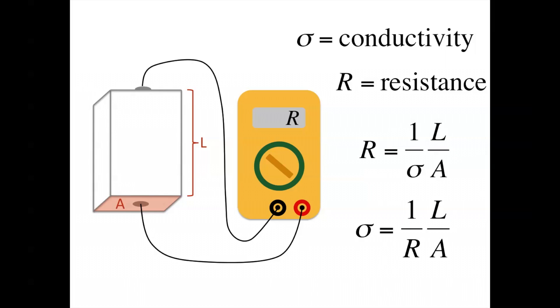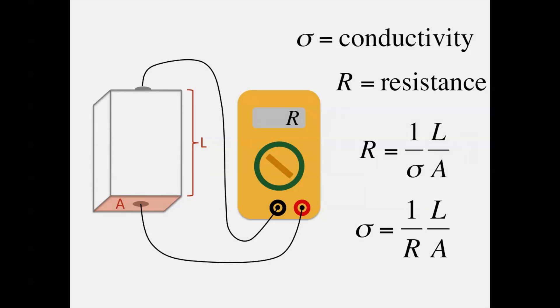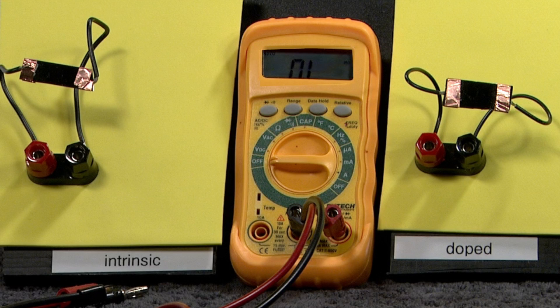Rearranging this equation gives us what we're looking for: the conductivity. Let's measure our samples and estimate the conductivity. Here are two samples. Notice that the doped sample looks identical to the intrinsic, or undoped, sample. Because we've only added trace impurities, the optical properties are nearly identical between the two samples.